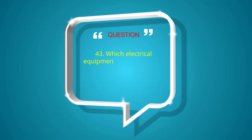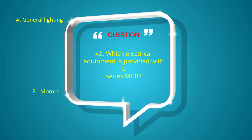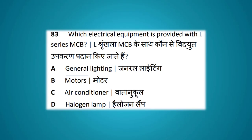Which electrical equipment is provided with L-series MCB? Options: general lighting, motors, air conditioner, halogen lamp. The answer is general lighting.